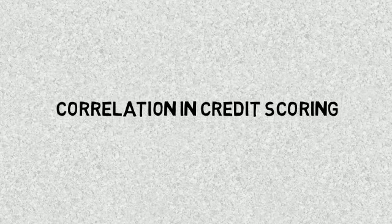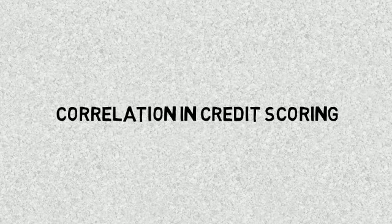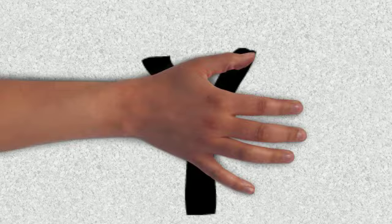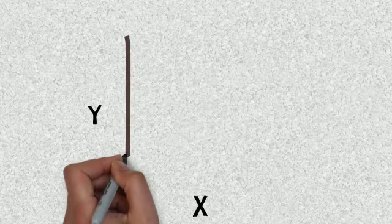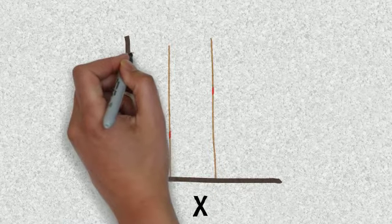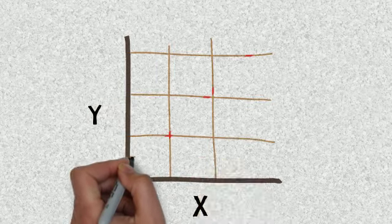Correlation in credit scoring. Correlation explains how Y varies when X changes. It measures the degree of association or covariance between two variables.